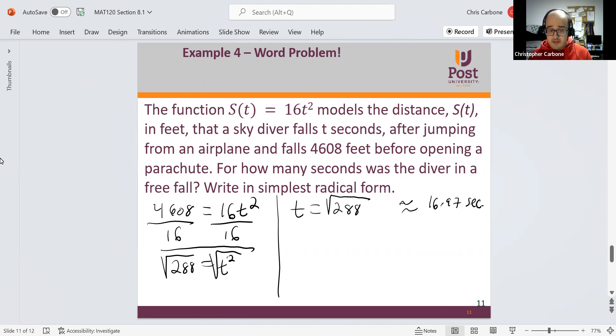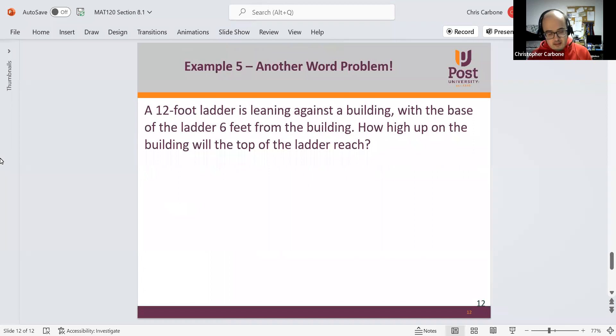But to write this in simplest radical form, we could factor out the biggest perfect square of 144 times 2. So this is 12 times the square root of 2.